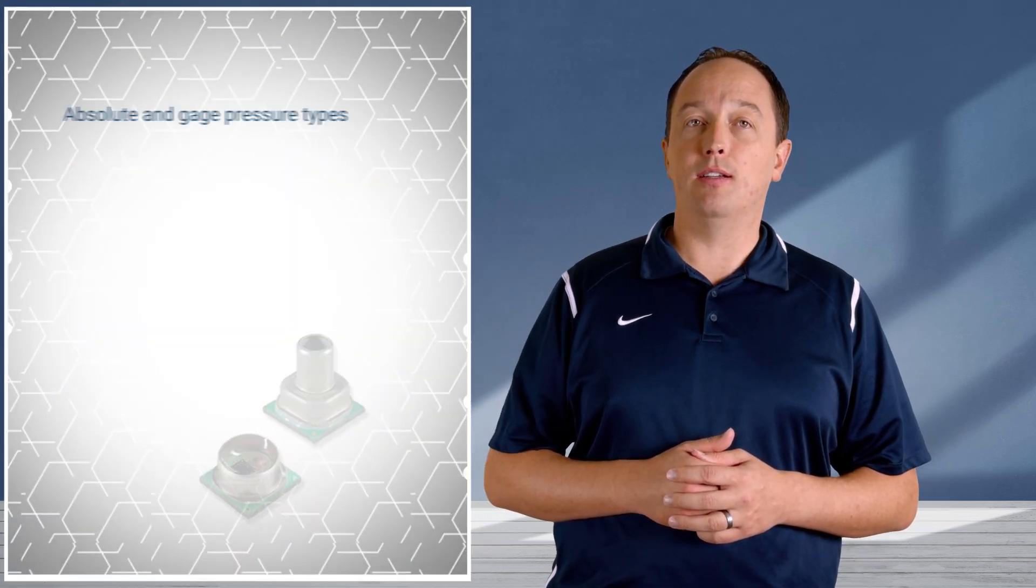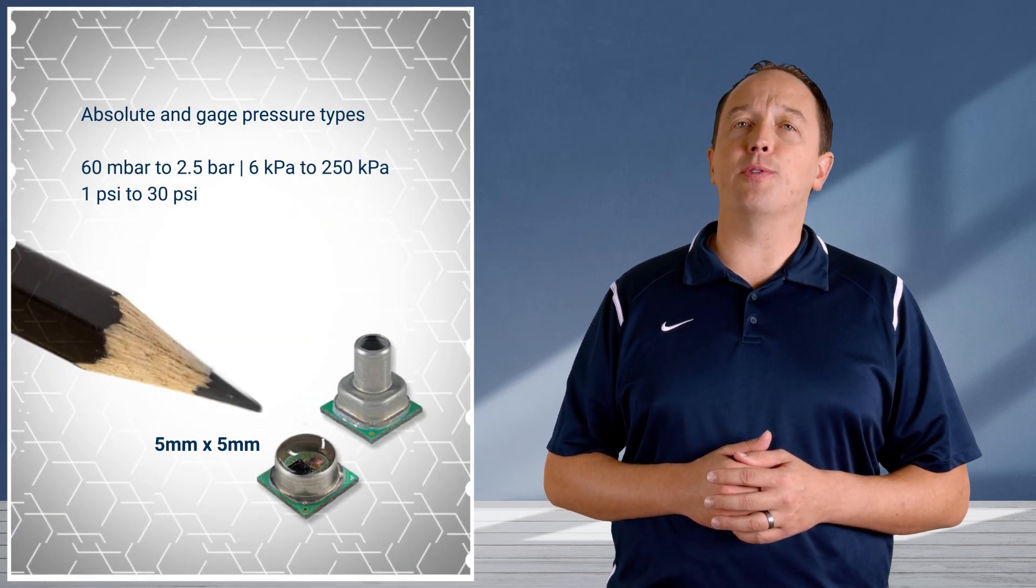Honeywell's MPR series micropressure board mount pressure sensors are compact, compensated, and amplified pressure sensors with 0.25 percent accuracy and a total error band as low as 1.25 percent. At just five by five millimeters, the MPR series offers an exceptionally small form factor that addresses weight, size, and space restrictions in a multitude of applications.